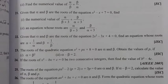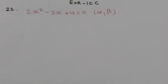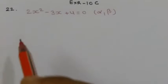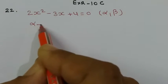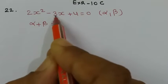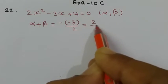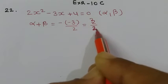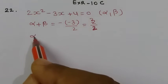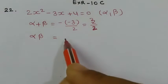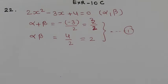The equation is 2x² - 3x + 4 = 0, and we know alpha and beta are its roots. So, sum of roots: alpha + beta = -b/a = -(-3)/2 = 3/2. Product of roots: alpha · beta = c/a = 4/2 = 2. Now we have the values of alpha + beta and alpha · beta.